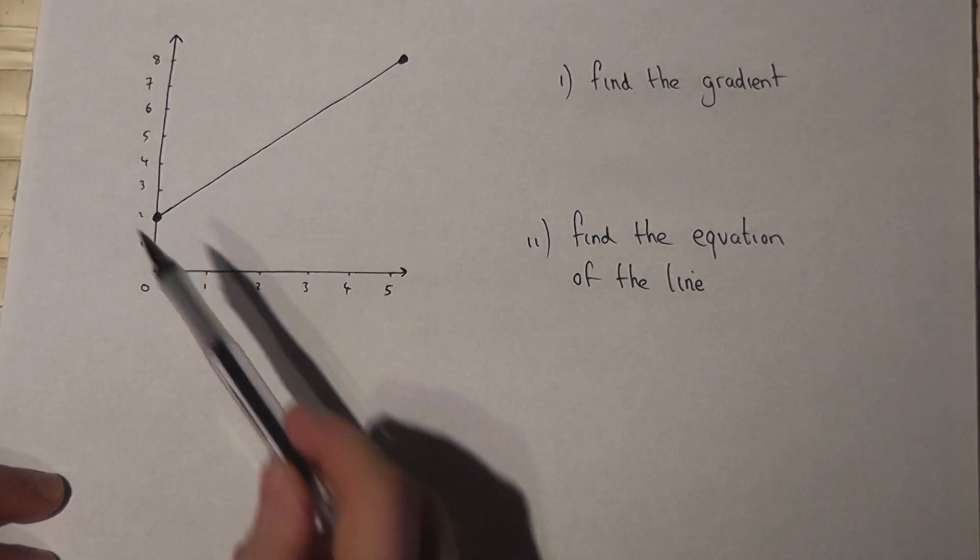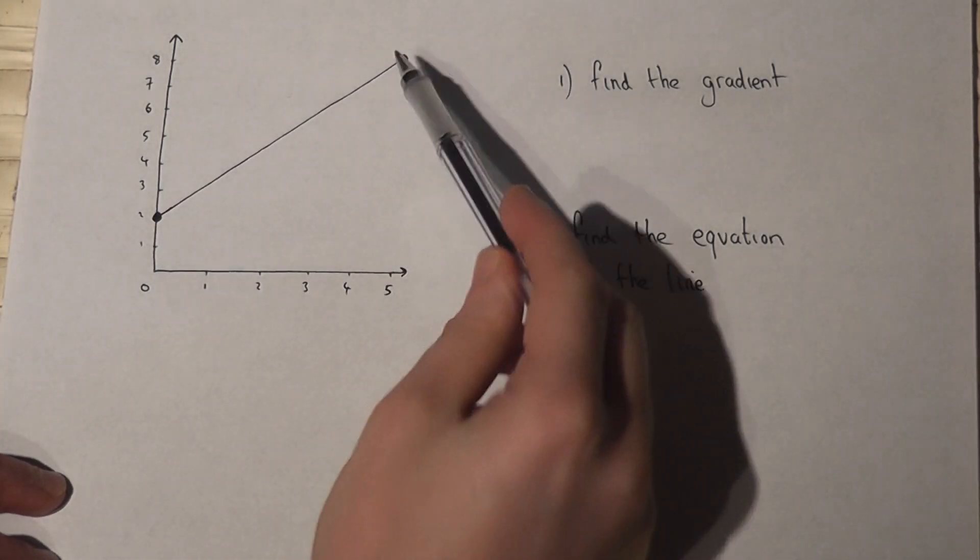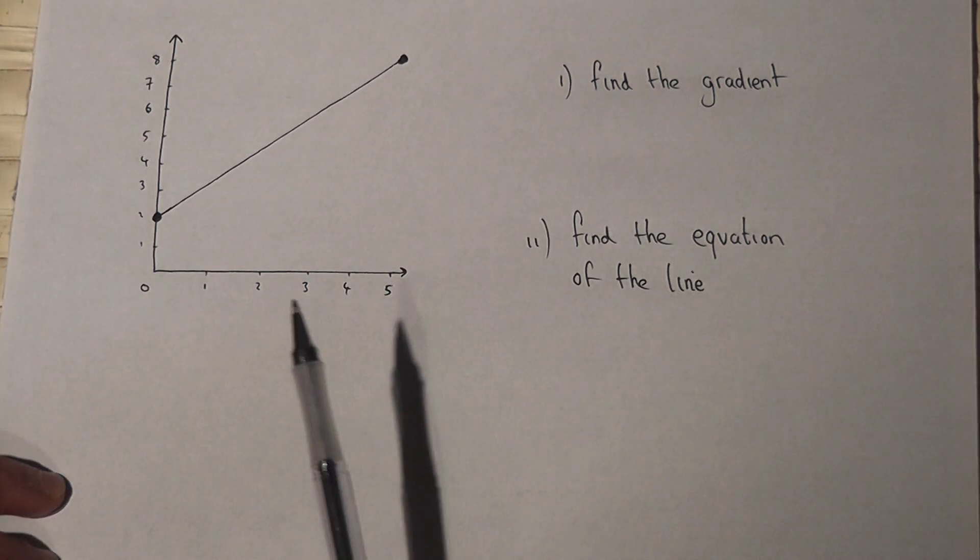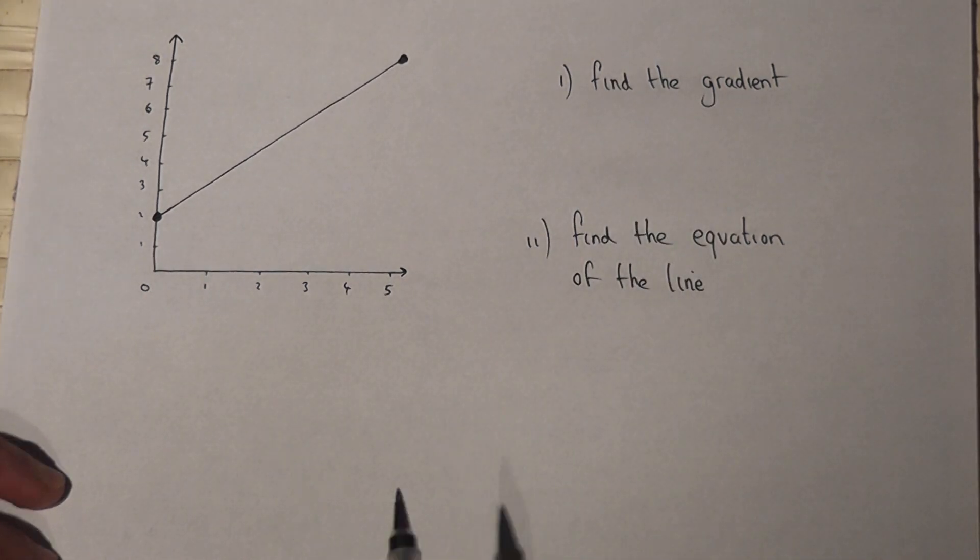In this question we're given a straight line passing through two coordinates. Now part one asks us to find the gradient. There's a very simple way to find a gradient, which is as follows.